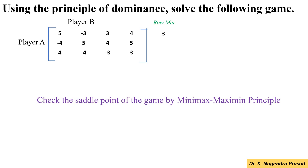In the second row, the minimum value is minus 4. And in the third row, the minimum value is minus 4. Among these minimum values, the maximum value is minus 3. And this is the maximin value.